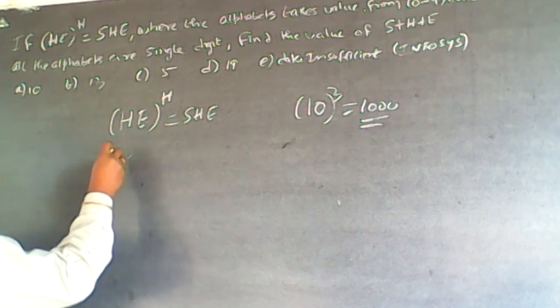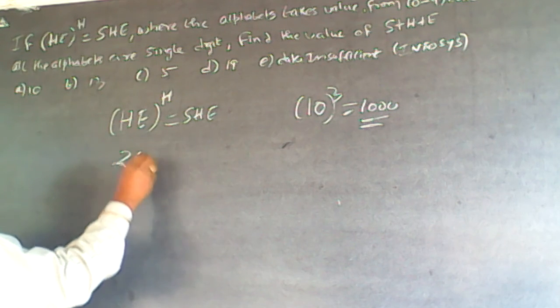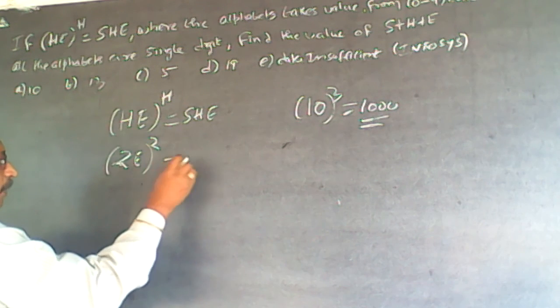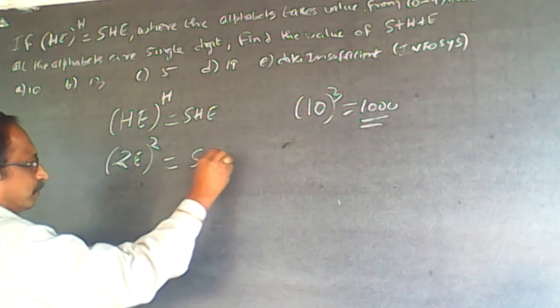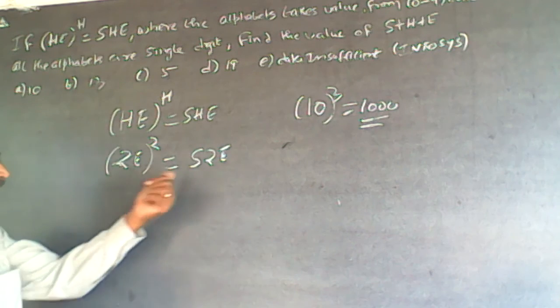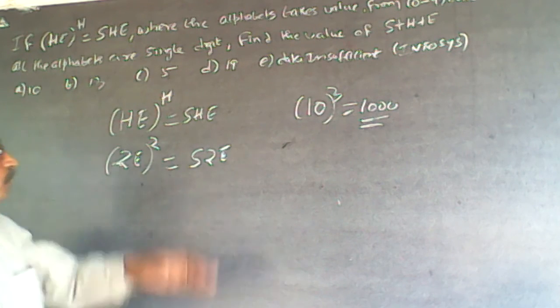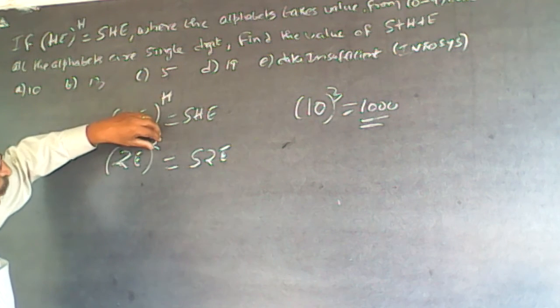So H wherever I have got H it will be only 2. So 2E to the power square will be equal to S2C. Now you have to find out what is E and C. I will restrict it. I will find out what is H. H is 2.